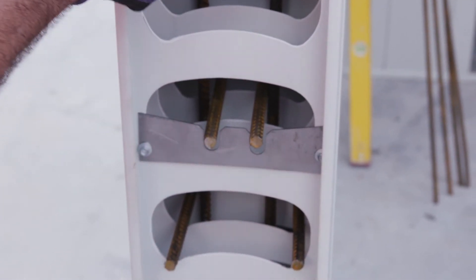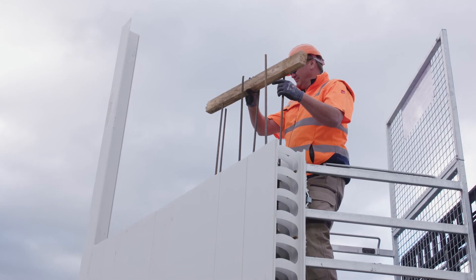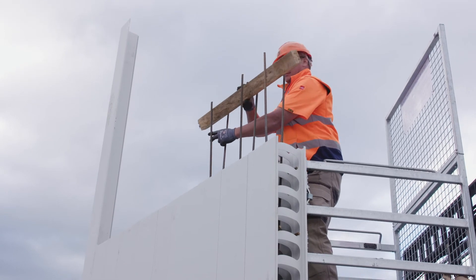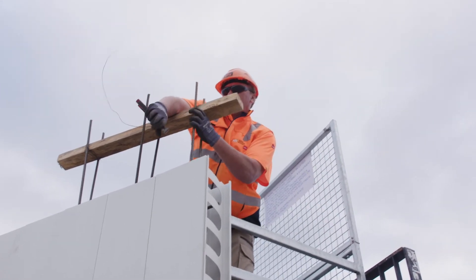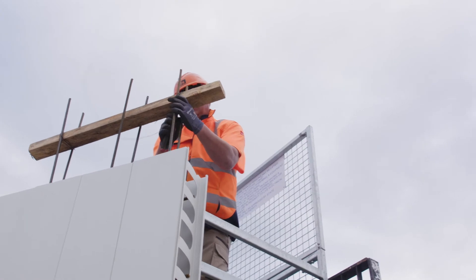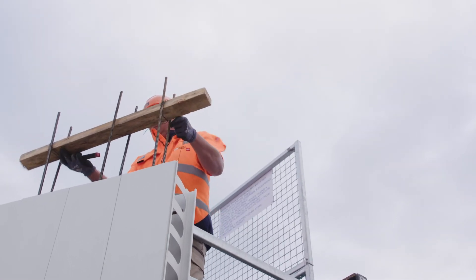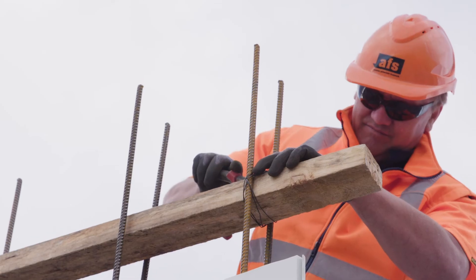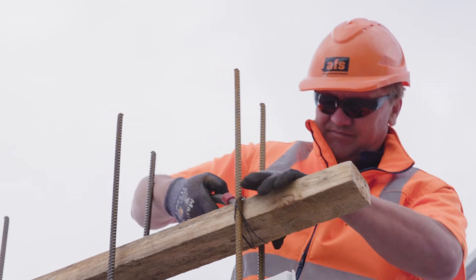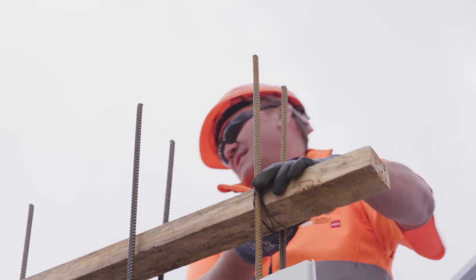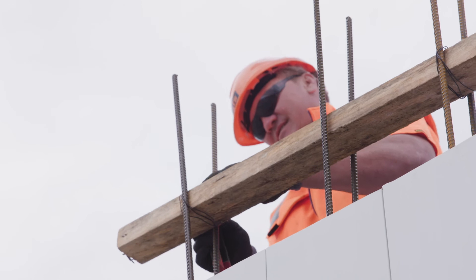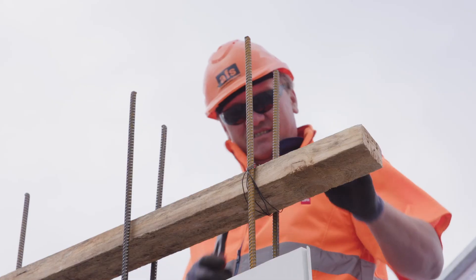It is important that the reinforcement is installed in a uniform manner and the correct spacing is maintained. When the vertical bars have been placed in position, ensure that the reinforcement bars are positively secured into position. This can be done by tying the top of each vertical bar to the top horizontal reinforcement as required to ensure bars remain in the correct position during the concrete pour.